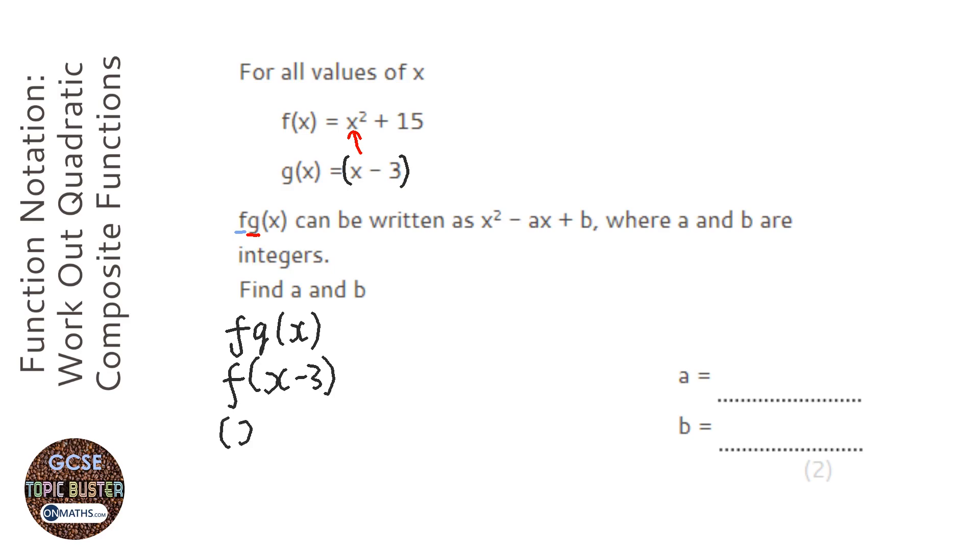So instead of x squared, it's x minus 3 squared plus 15. Let's expand that. Whenever you square a bracket, always write it twice, otherwise you end up with x squared minus 9, which is not the right answer.